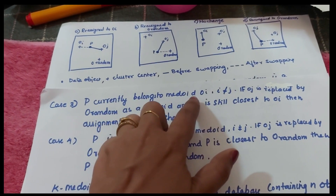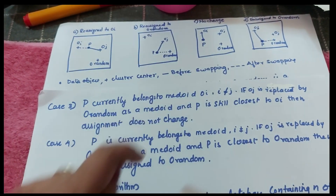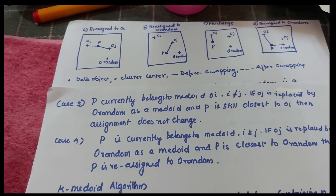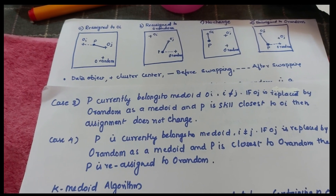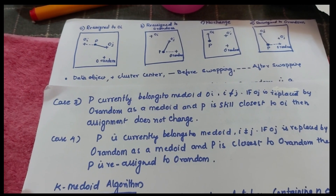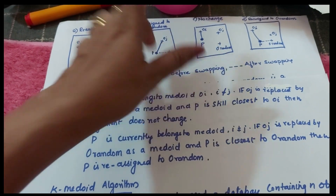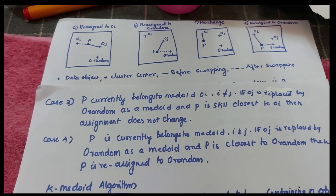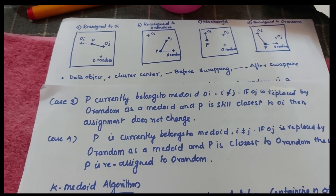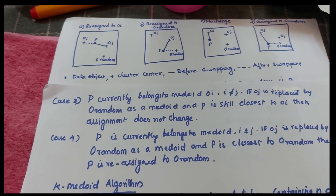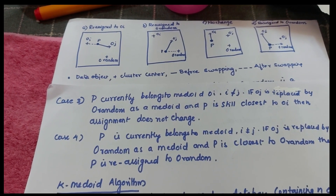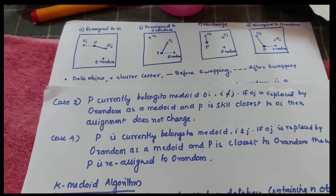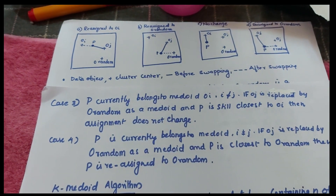Case 3: p currently belongs to medoid O_i where i ≠ j. If O_j is replaced by O_random and p is still closest to O_i, then the assignment does not change. Case 4: p currently belongs to medoid O_i where i ≠ j. If O_j is replaced by O_random and p is closest to O_random, then p is assigned to O_random.